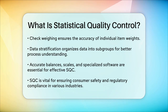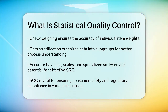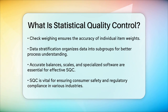In summary, Statistical Quality Control is a vital process that uses statistical methods to ensure products meet quality standards. It helps manufacturers identify and correct variations, ensuring that products are safe, consistent, and compliant with regulations. Whether it's in food production, pharmaceuticals, or other manufacturing sectors, SQC is an essential tool for maintaining high-quality products.